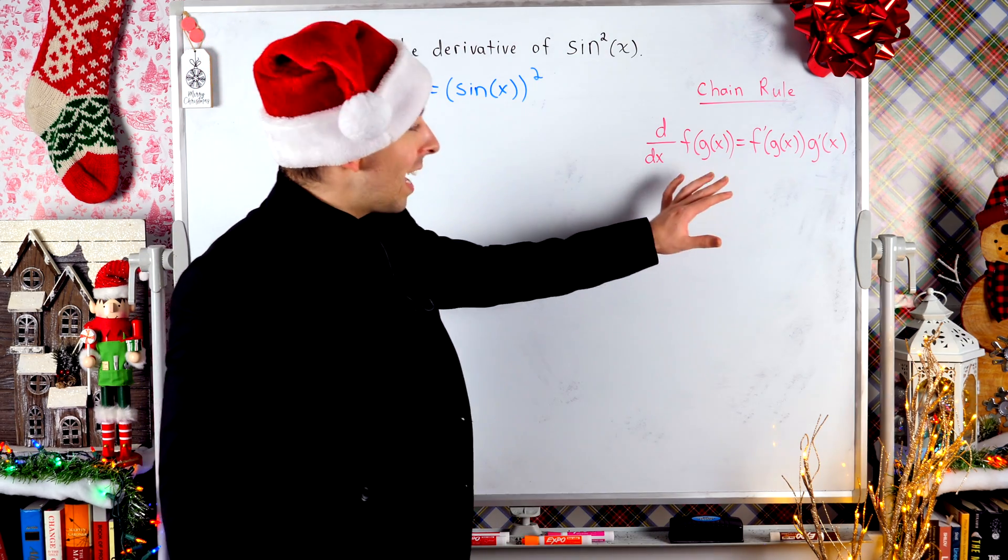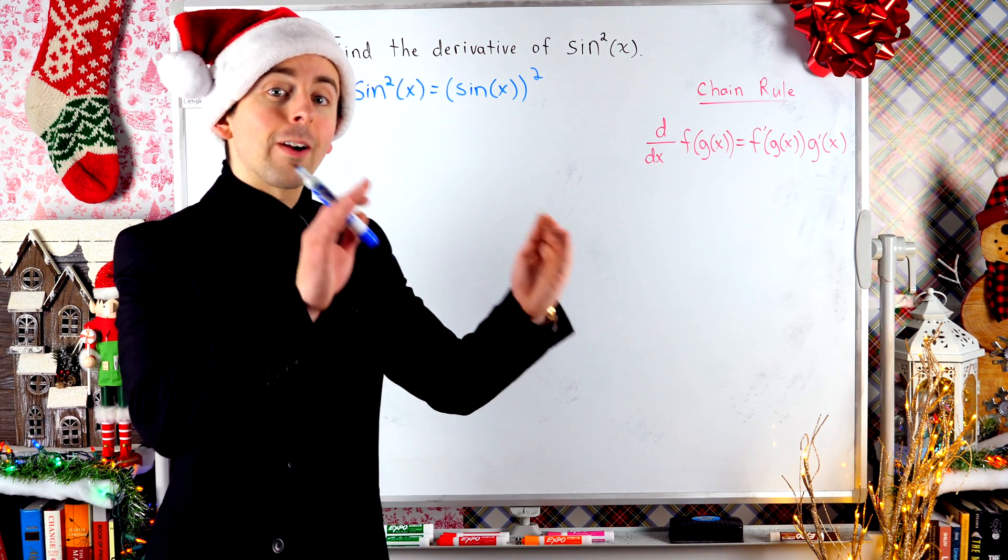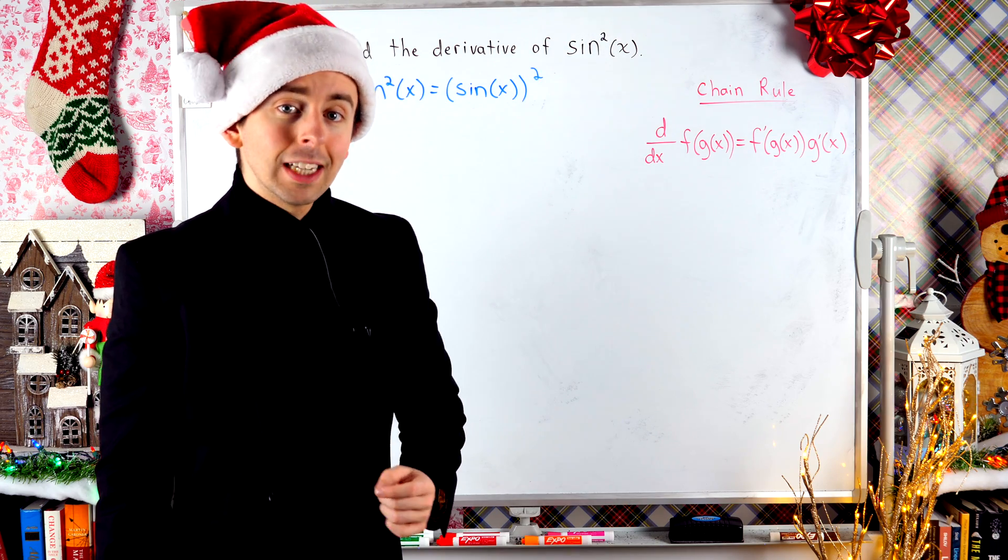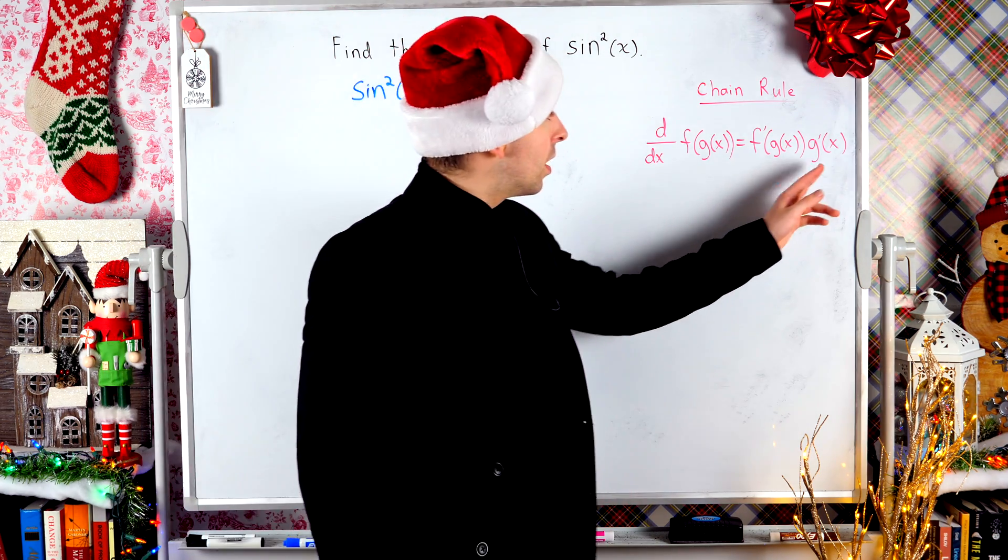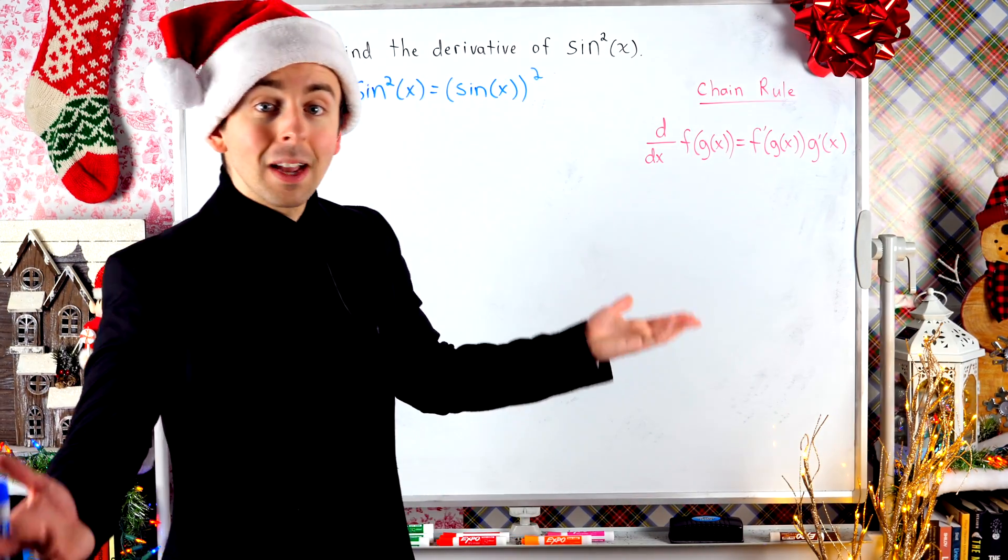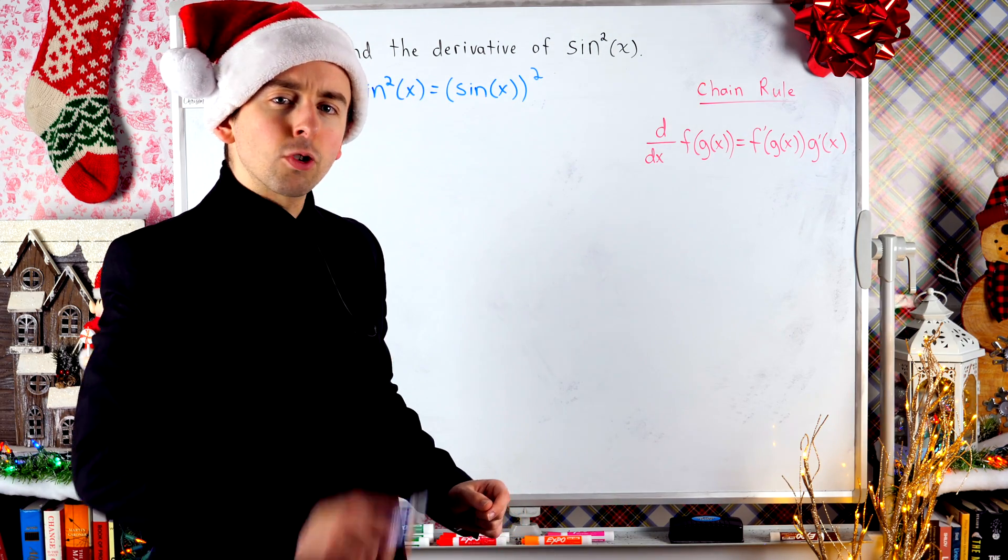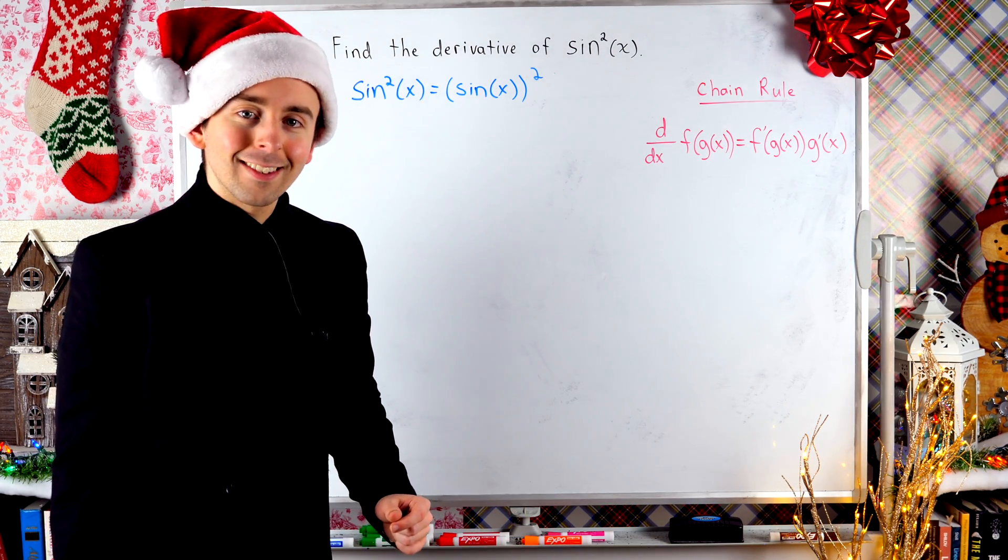Now to use the chain rule, we've got to identify our outside function and take its derivative and then multiply that by the derivative of the inside function. And then we're done. So give it a try before watching the rest of the lesson.